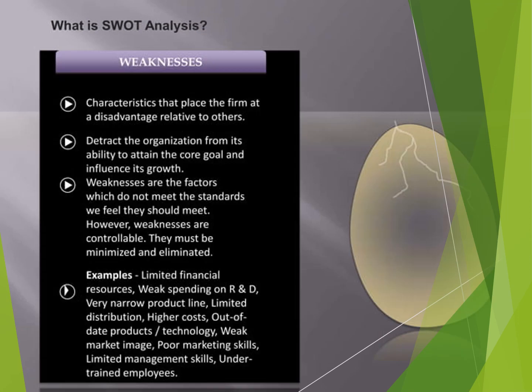Weakness is a characteristic that places the firm at a disadvantage relative to others. These are factors which detract from the organization's ability to attain its core goals and influence its growth — factors that do not meet the standards they should. Examples include limited resources, a weak research and development department, limited distribution options, higher cost of products, and a weak distribution network.